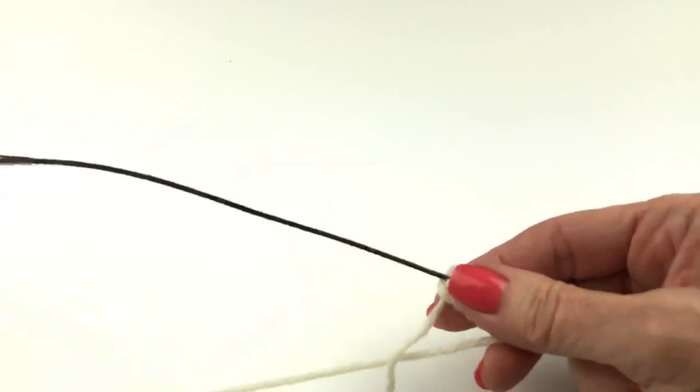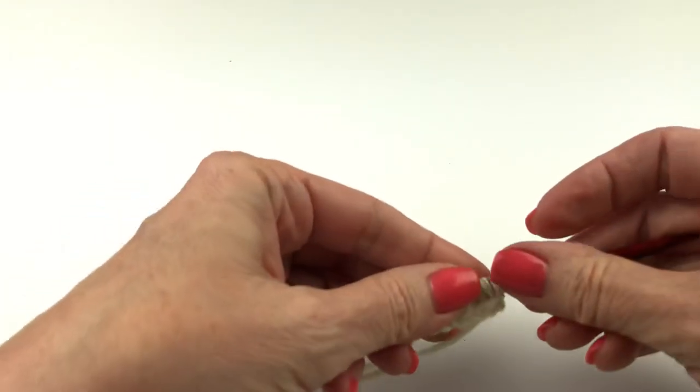Now if you're on straight needles, just knit one row, and then when you get down there, you can just drop it off.